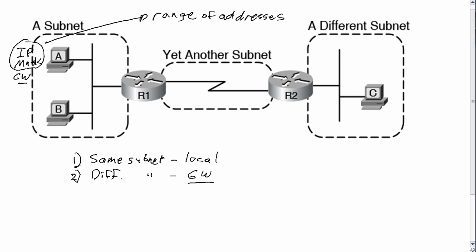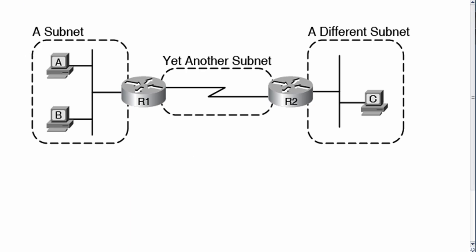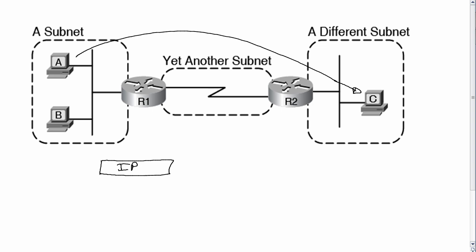So keeping that in mind, let's think about what happens with encapsulation in this case. Host A is going to send a packet destined for Host C. Host A will build this IP packet, represented by this rectangle, and the destination IP address will be Host C's IP address and the source IP address will be Host A's IP address. Simple enough. However, A can't send that IP packet across the LAN without putting something else around it — Host A has to put some data link header and trailer around it, in this case an Ethernet header, which will contain MAC addresses.